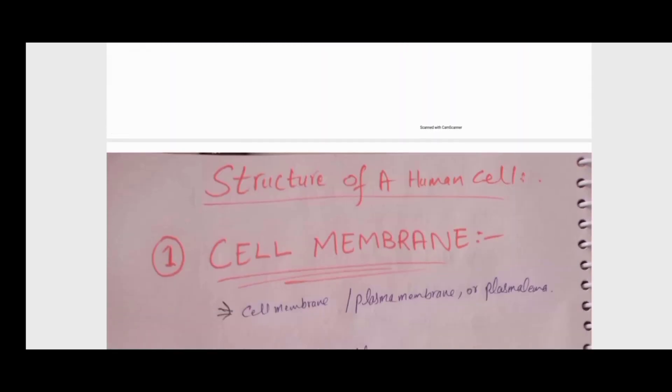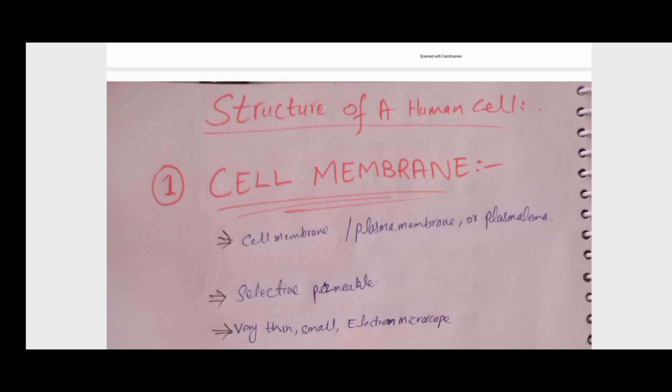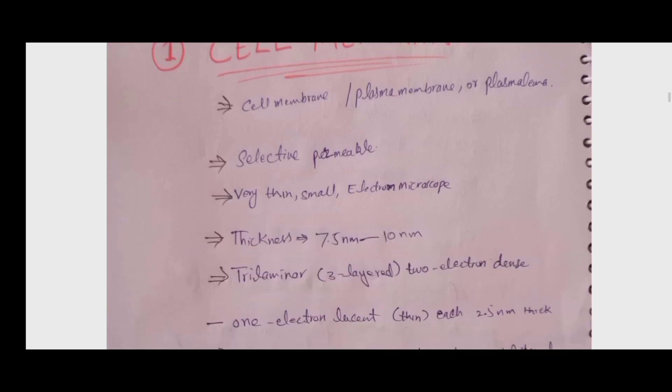What is the structure of the cell? The first component is the cell membrane — it is the outer membrane in animal cells. Animal cells contain only a cell membrane; they don't have a cell wall. Cell walls are present in plant cells and fungi cells. The cell membrane is also known as the plasma membrane or plasmalemma. It is selectively permeable, meaning it can allow some molecules and substances to enter while having no permeability for others.